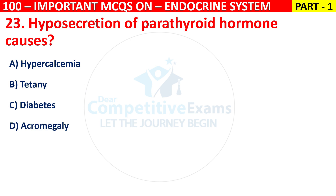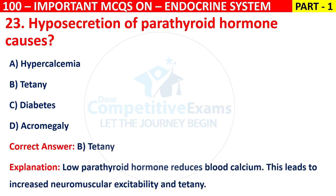The right answer is B, that is tetany. Low parathyroid hormone reduces blood calcium. This leads to increased neuromuscular excitability and tetany.